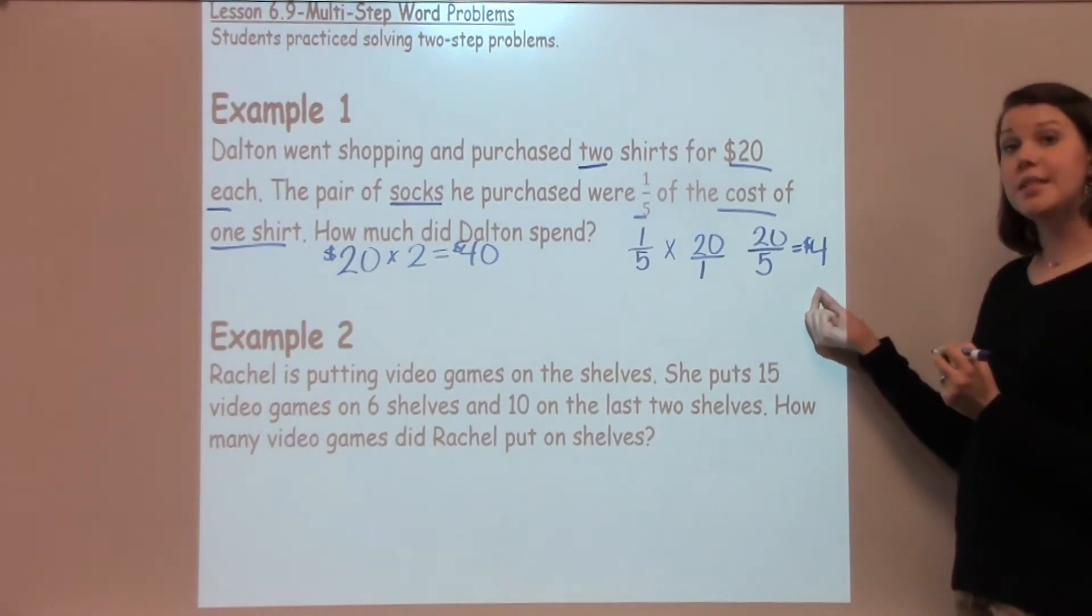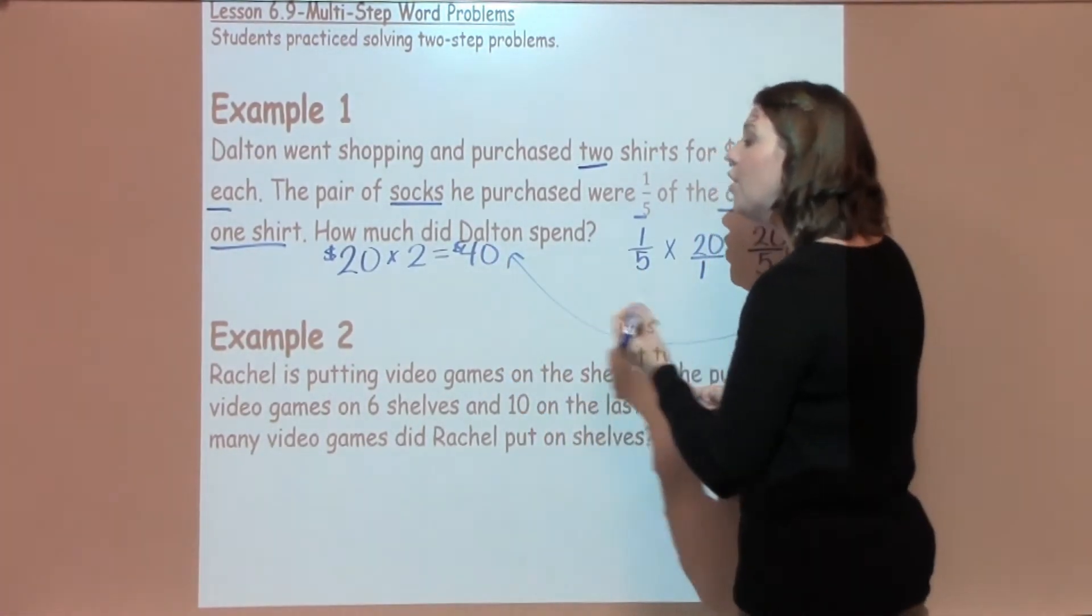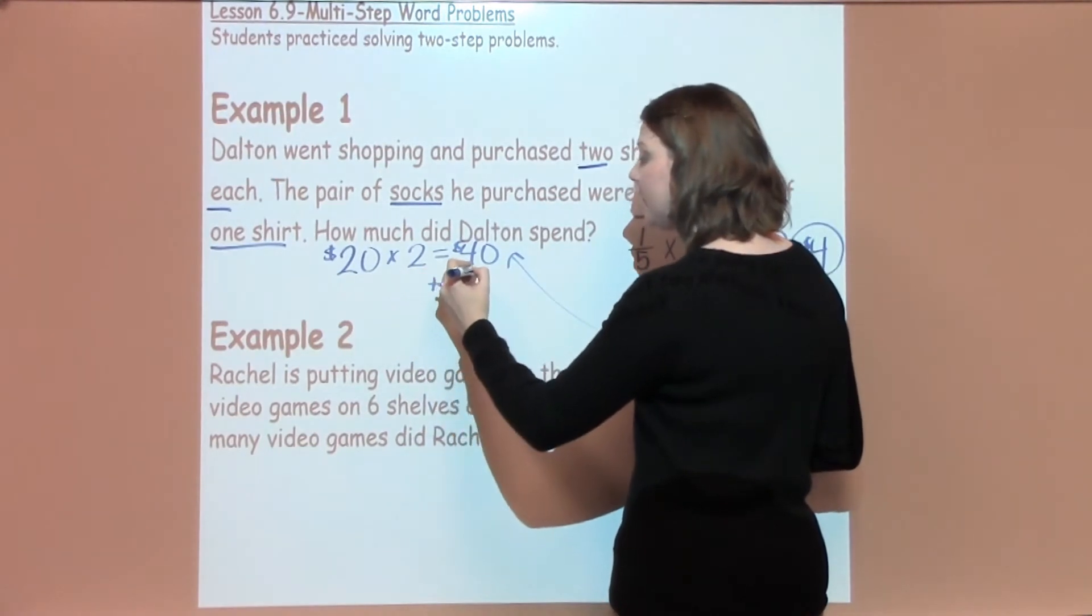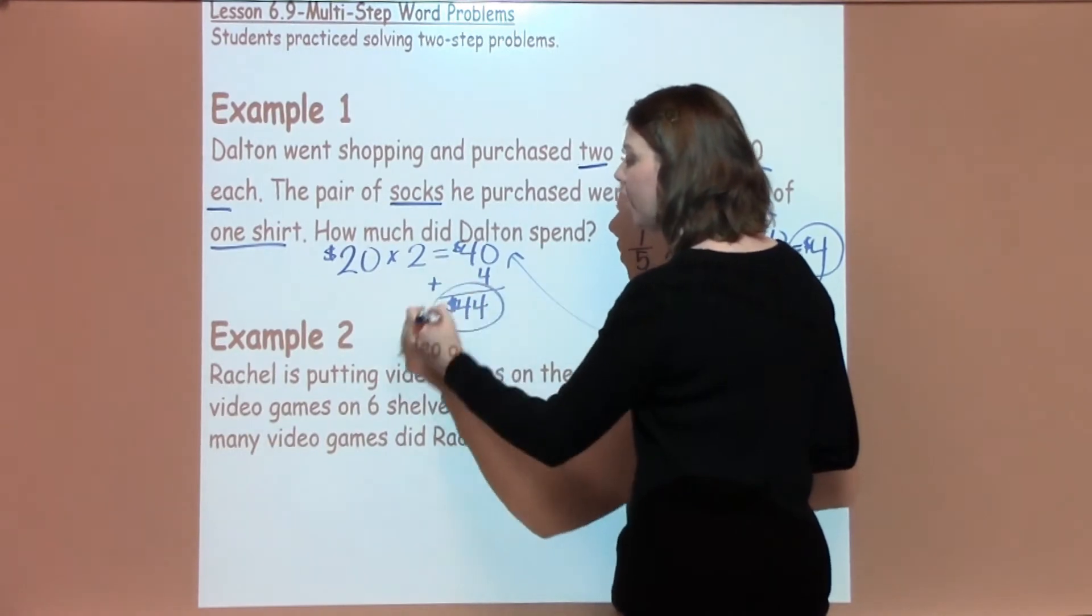I need to use this information from over here and add it with my $40. So, that means I'm going to take my $40 plus $4, which means that Dalton spent a total of $44.